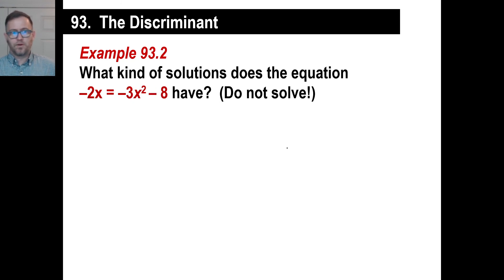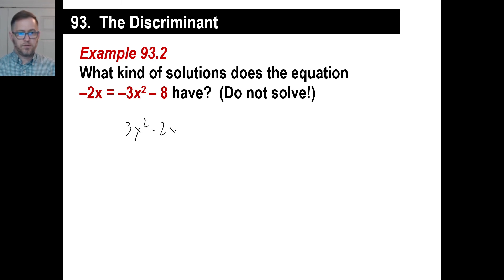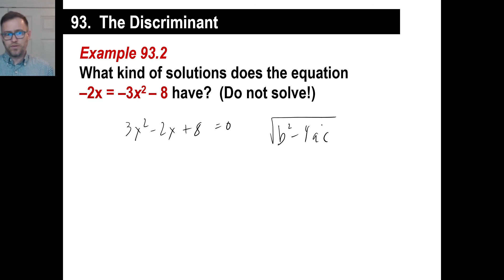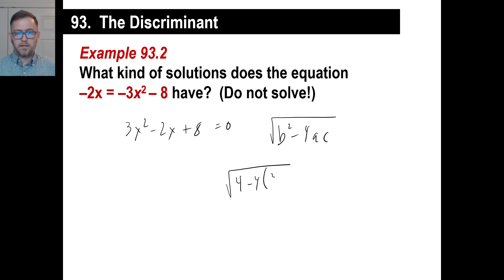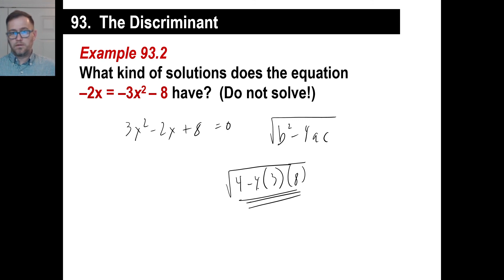What kind of solutions does this equation have? Don't bother to solve it — just find the discriminant. We rearrange to get 3x² − 2x + 8 = 0. All we care about is the discriminant — the thing that tells us what kind of solutions this quadratic equation is going to have. B squared is 4, minus 4 times A times C. You can tell right away that's going to be a negative number. So if it's negative, we know there are two imaginary solutions.